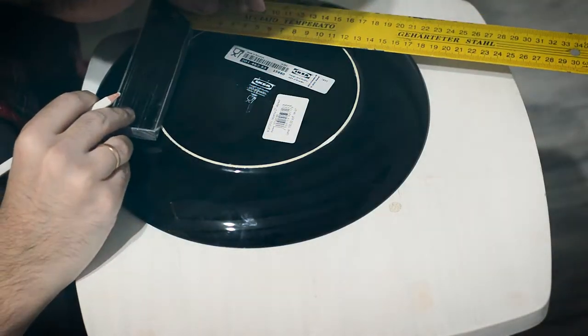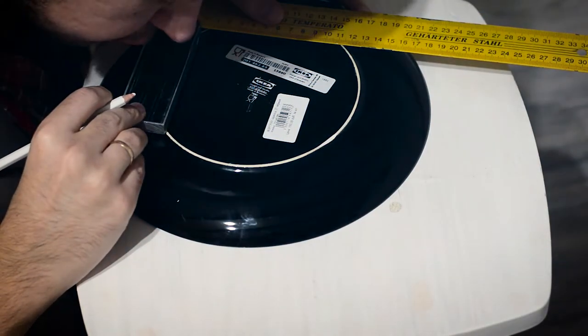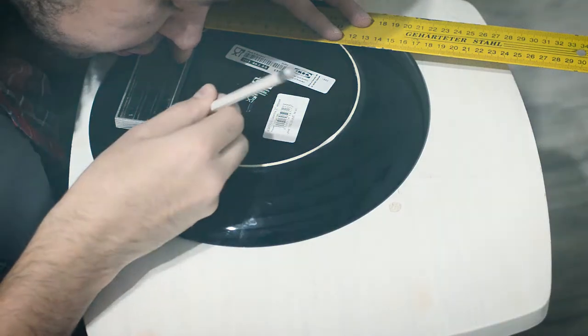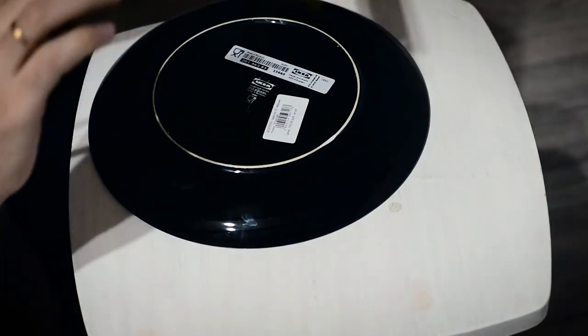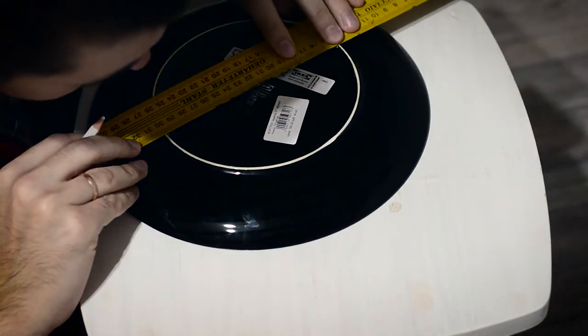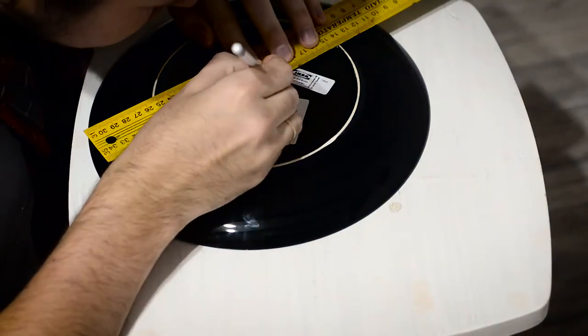With markings, draw a line. Freely move the angle and repeat the action. The intersection of these lines is the center of the plate. I draw three lines for accuracy.